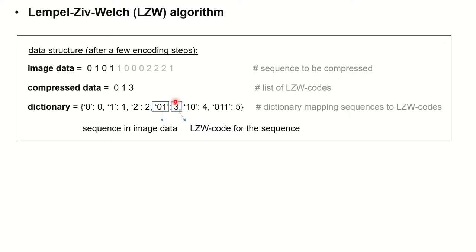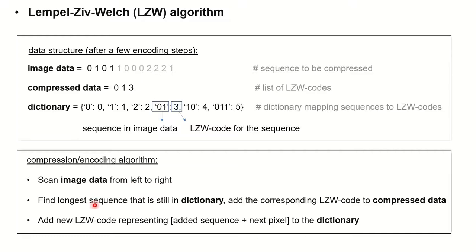The algorithm works as follows: we scan the image data from left to right and always try to find the longest sequence that we still have in our dictionary, then add the corresponding LZW code to the compressed data. We look for a sequence and always check if it's still in the dictionary. Once we find the longest sequence still in the dictionary, we add the corresponding code to the compressed string. Then we add a new entry to the dictionary — essentially the sequence we just added plus the next pixel — and create a new code for that sequence.